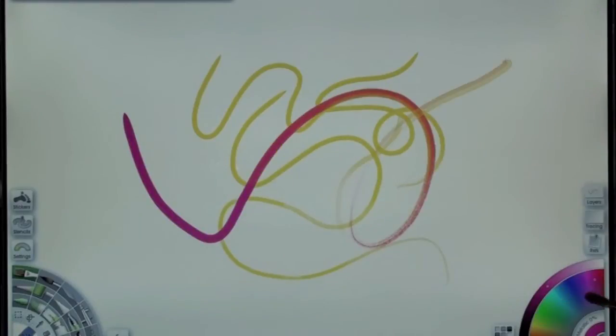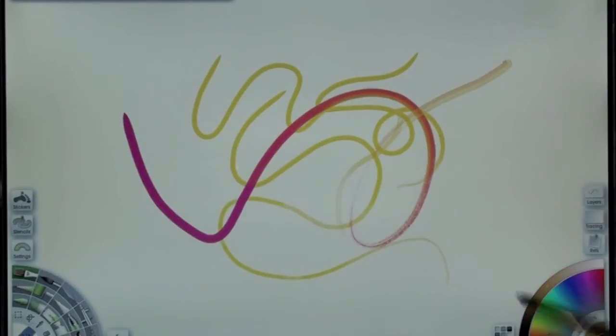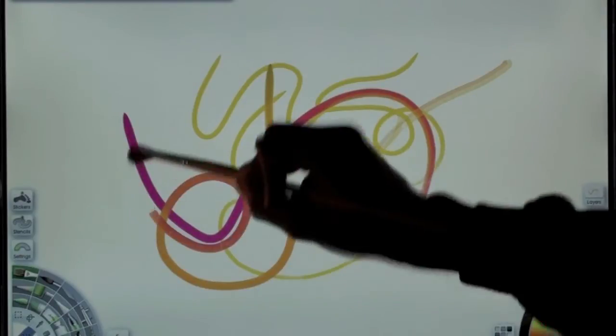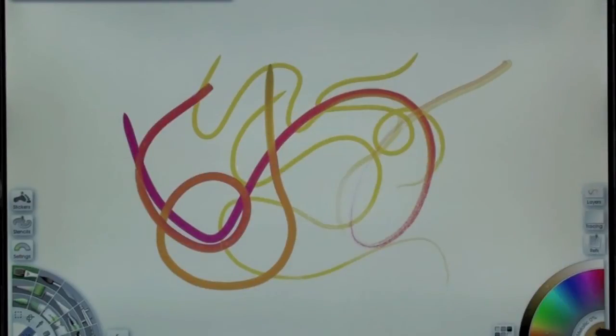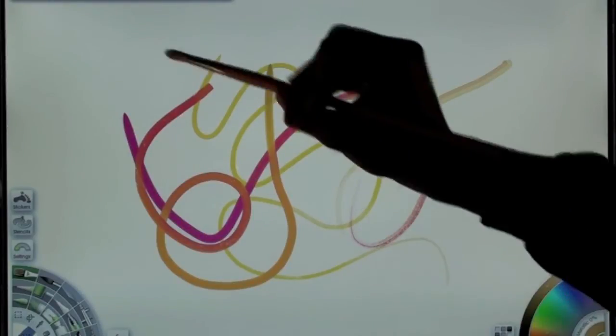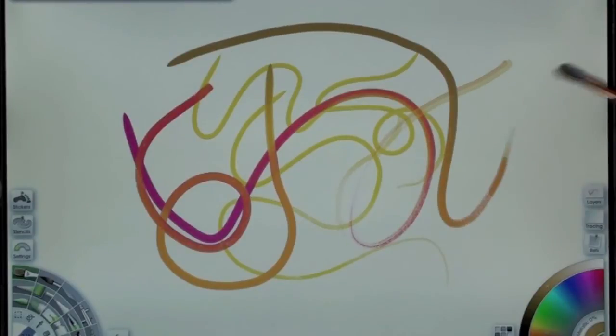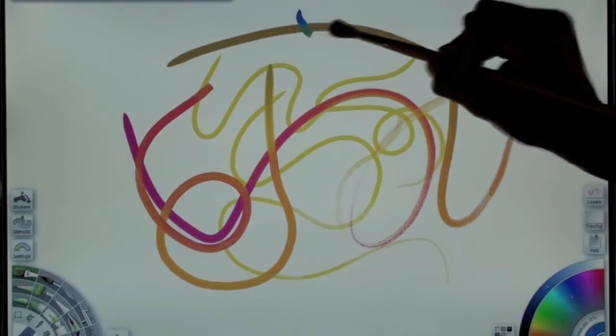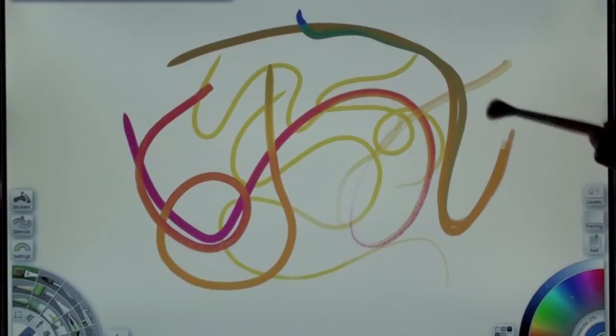So now as you can see, some of the color is being picked up as I paint. Now also I can select real color blending here. Choose another color. And the colors blend together.